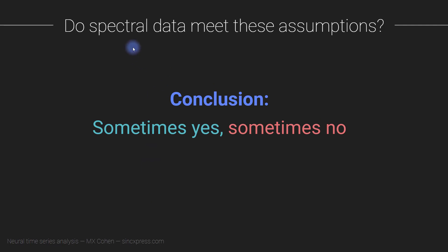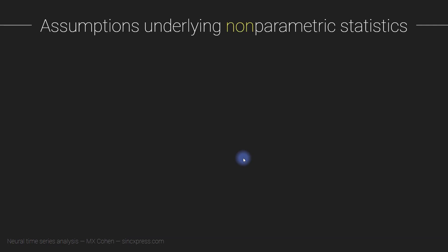Overall, the conclusion is: do spectral data meet the assumptions required by parametric statistics? The answer is sometimes yes and sometimes no. It depends a lot on the experiment, how you're measuring the data, the kind of data, and the kind of analyses you're applying. Things get pretty complicated quickly when it comes to parametric statistics and its underlying assumptions.